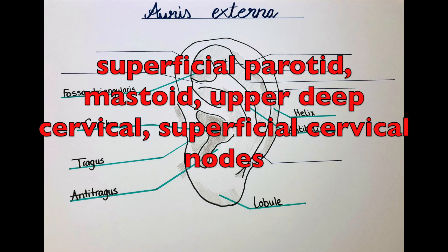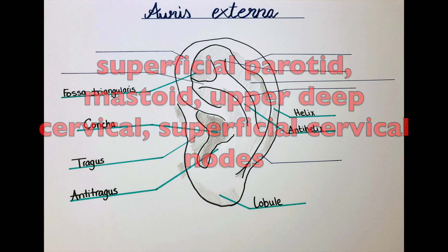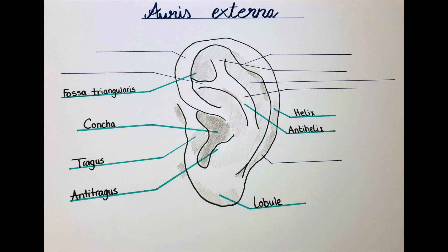The lymphatic drainage is by the superficial parotid nodes, the mastoid nodes, the upper deep cervical nodes, and the superficial cervical nodes — essentially the lymph nodes around the area.